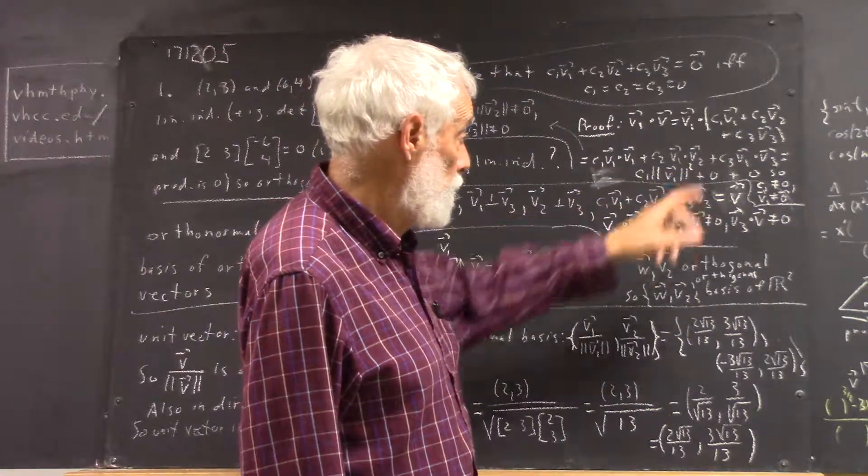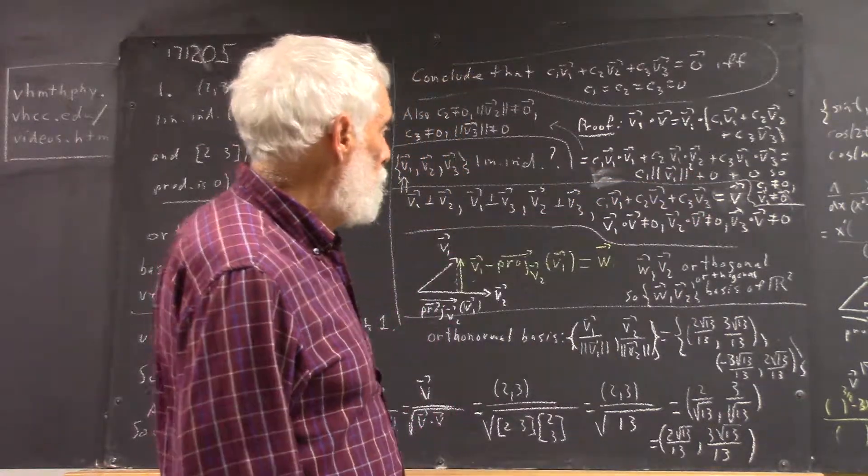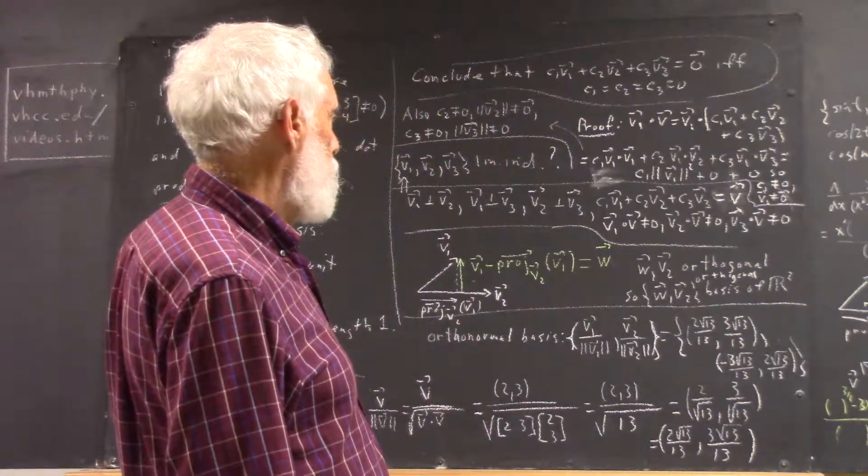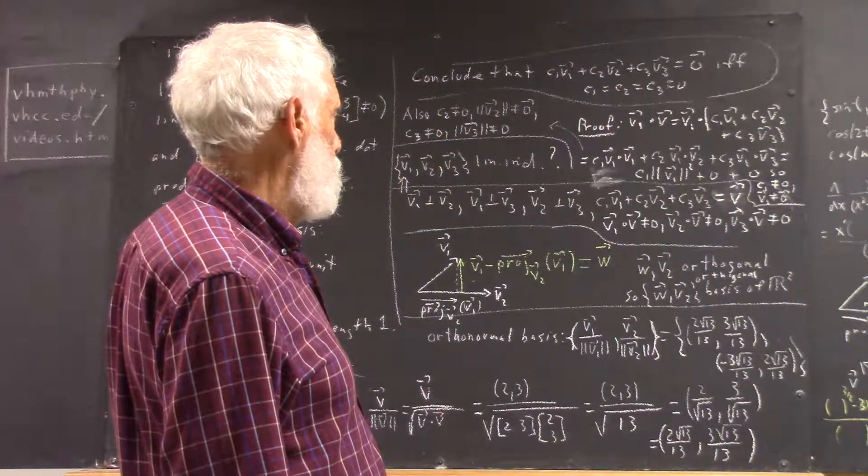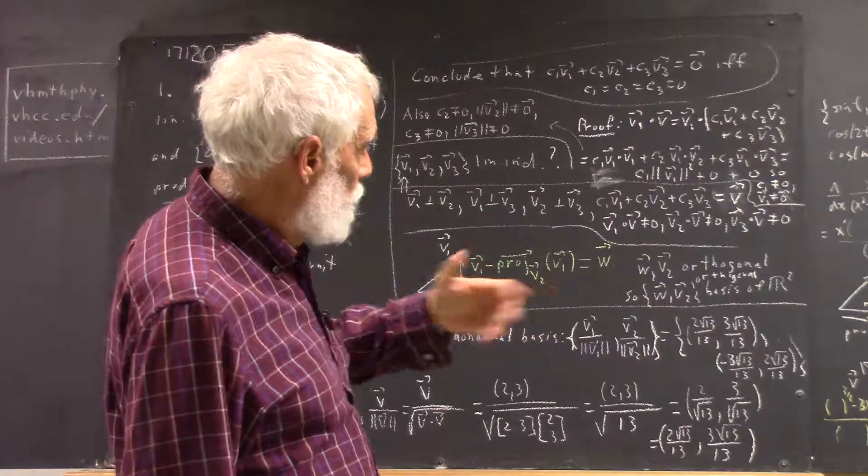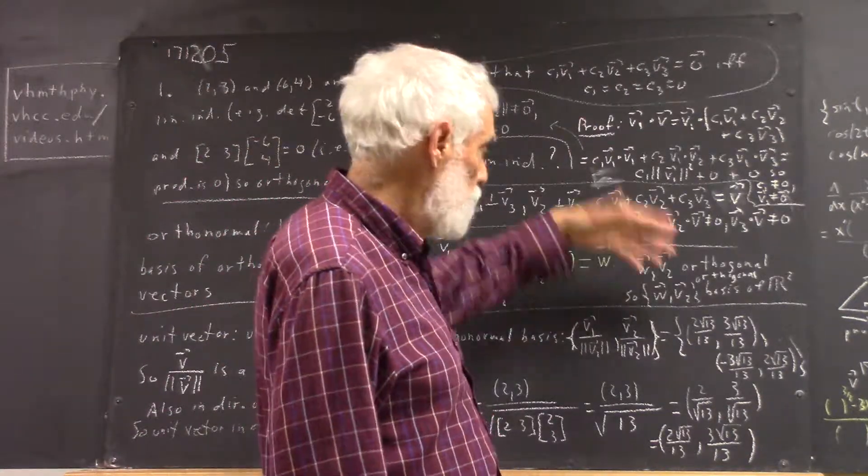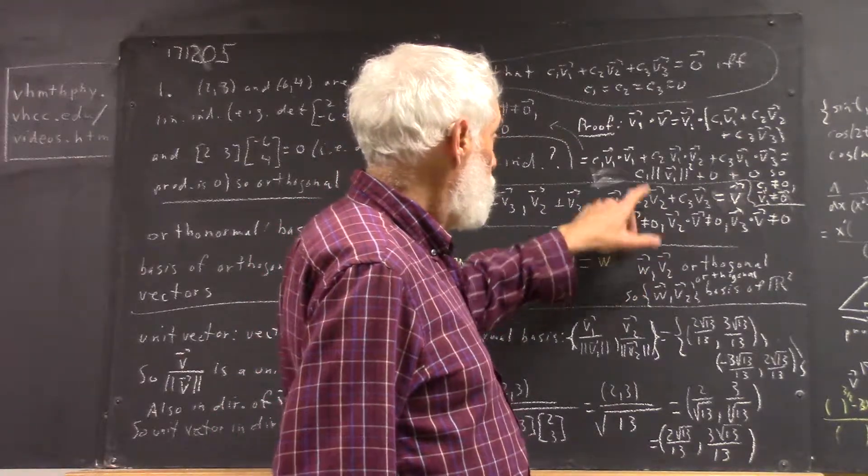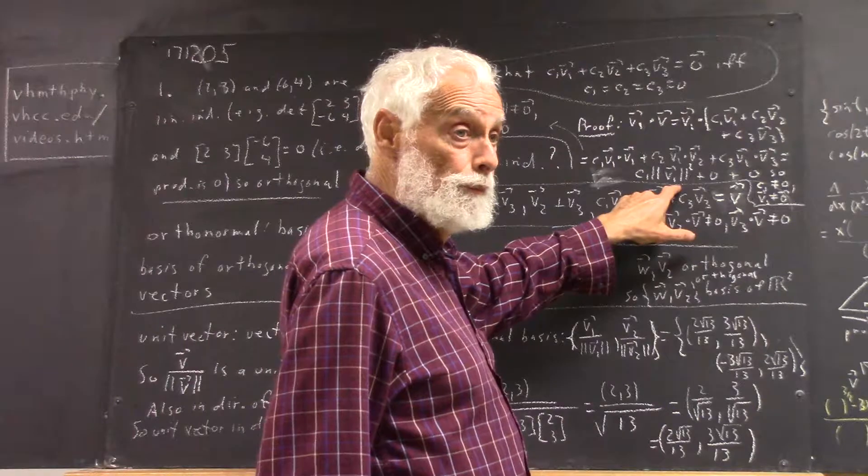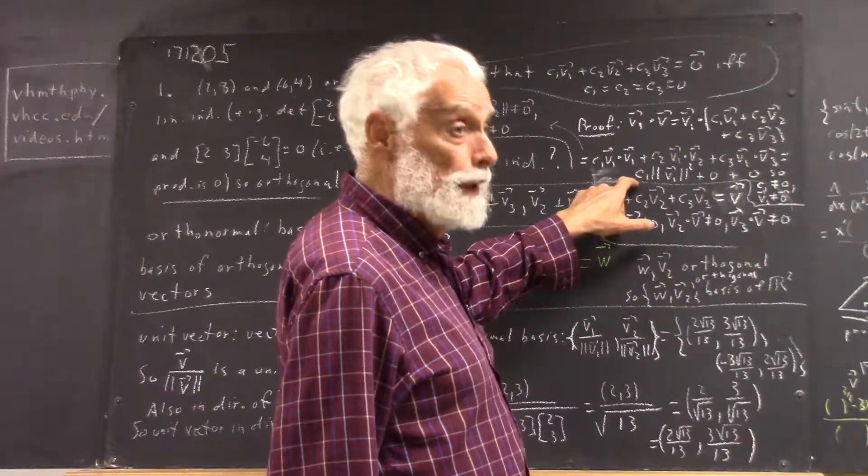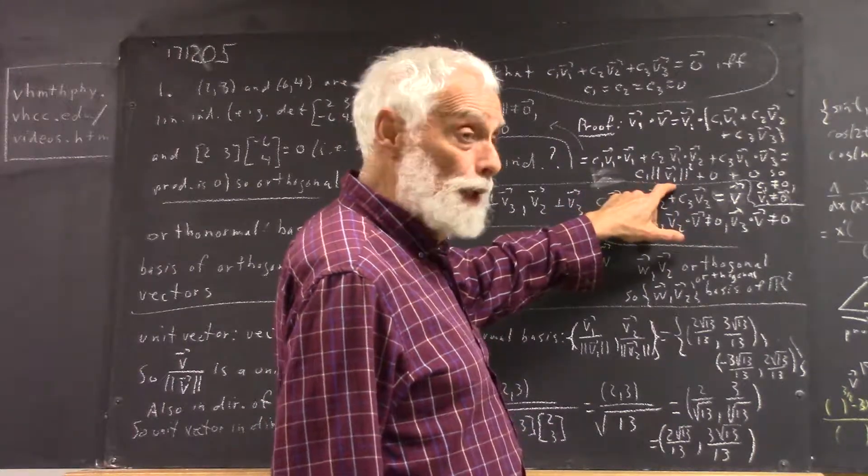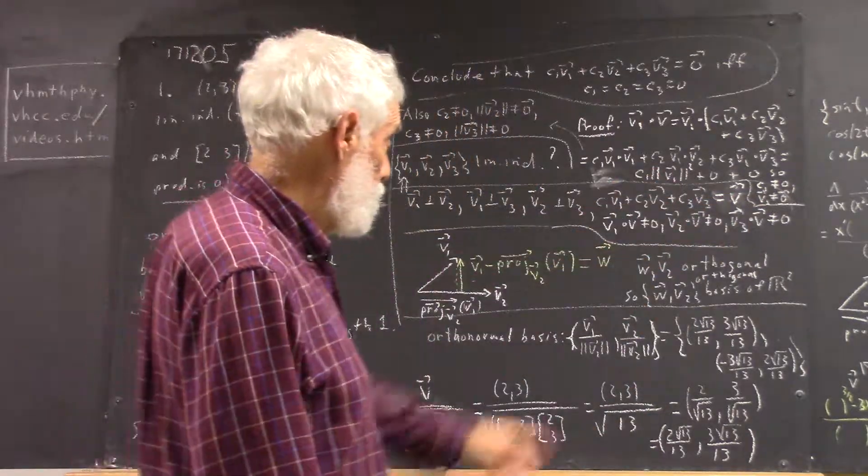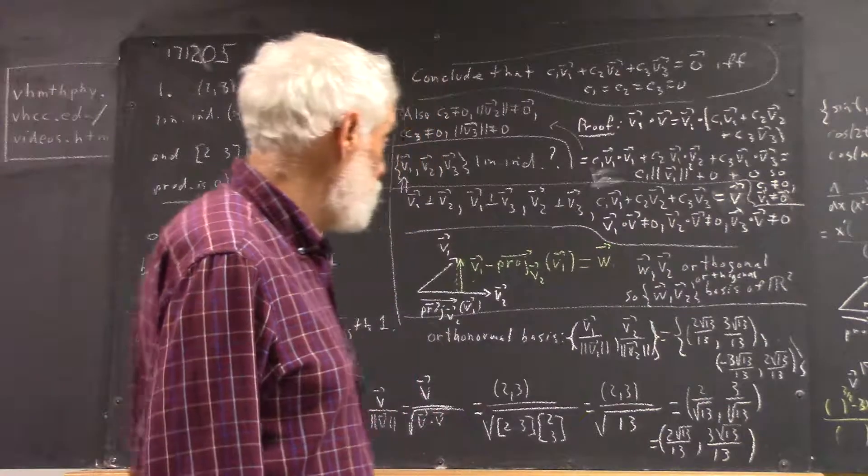c1·v1 dot v1 is c1 times the square of the magnitude of v1. Well, from the premise that v1 dot v is not zero, we determined that this can't be zero, which means that c1 can't be zero and the magnitude of v1 can't be zero. And that's actually—it's the fact that the magnitude of v1 can't be zero that's critical to this proof.